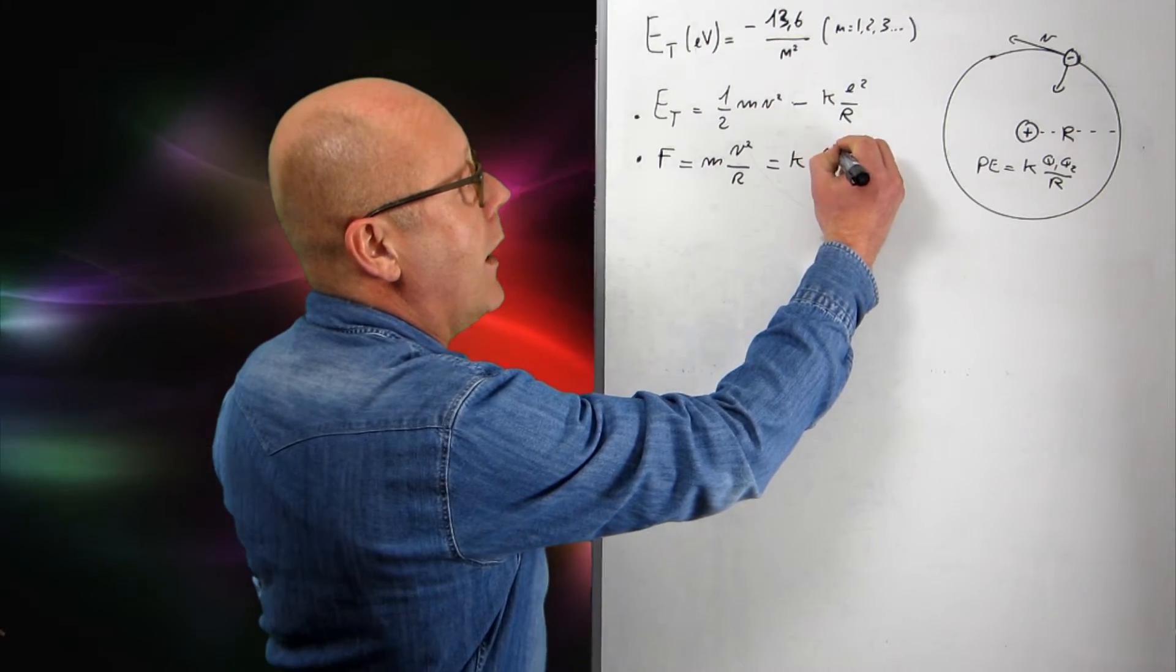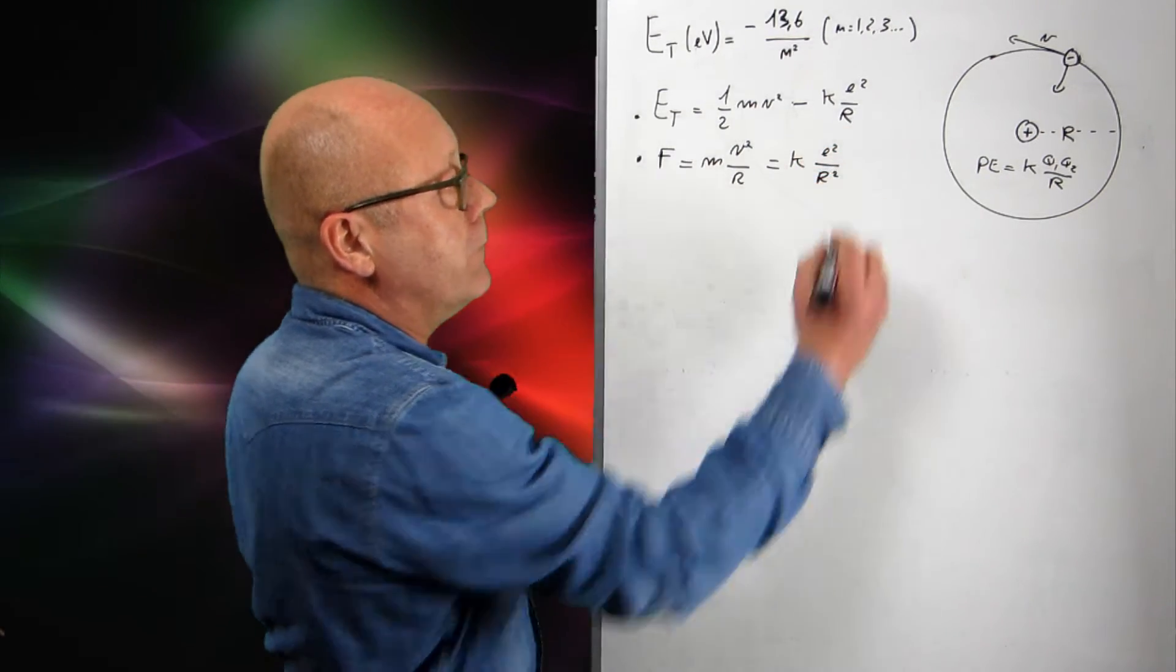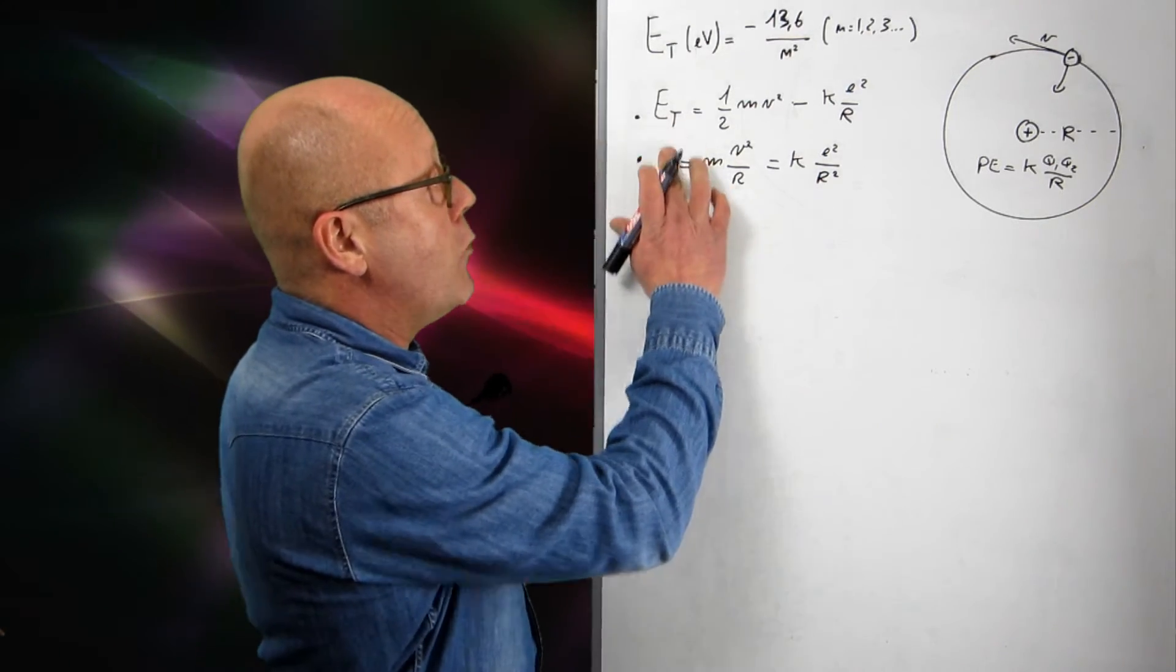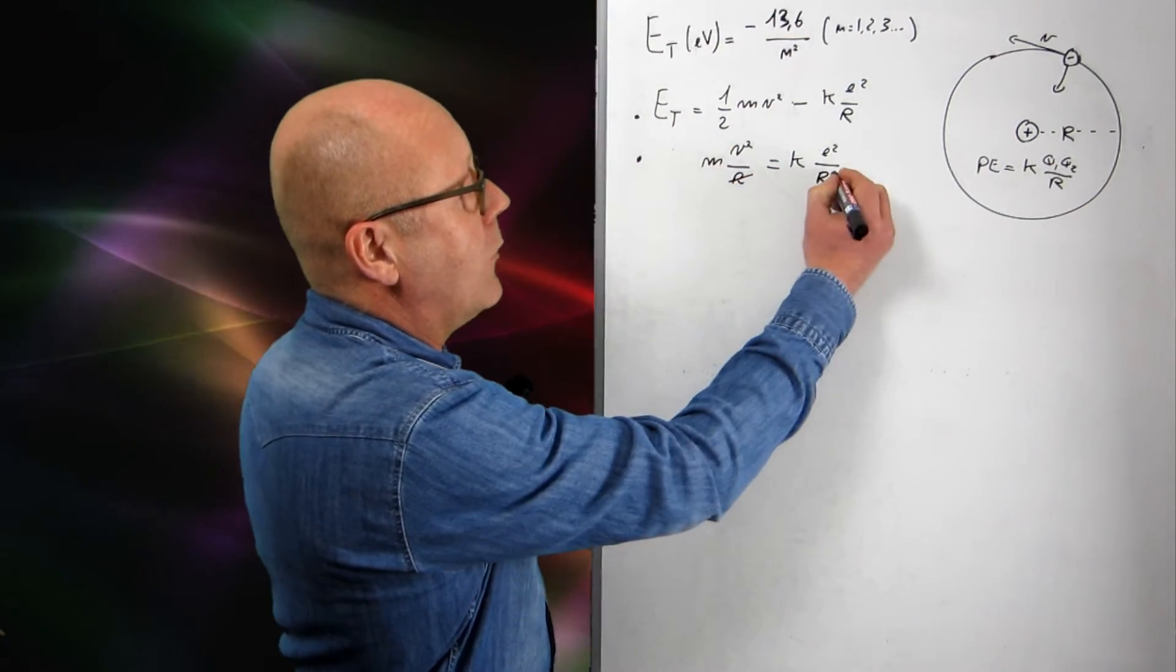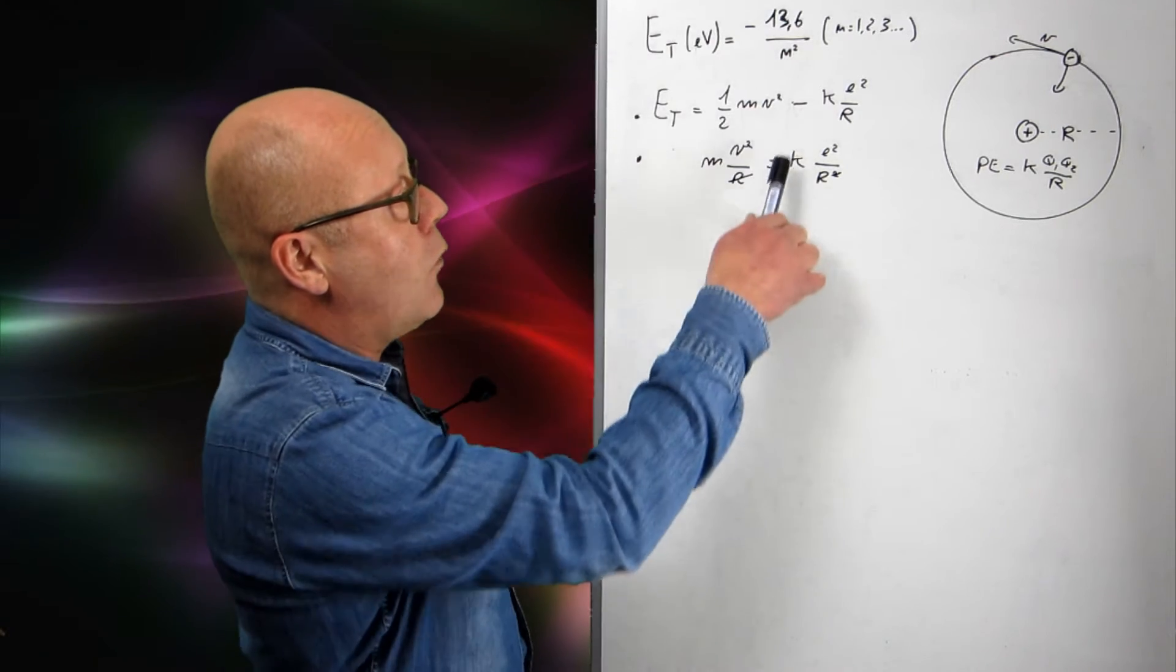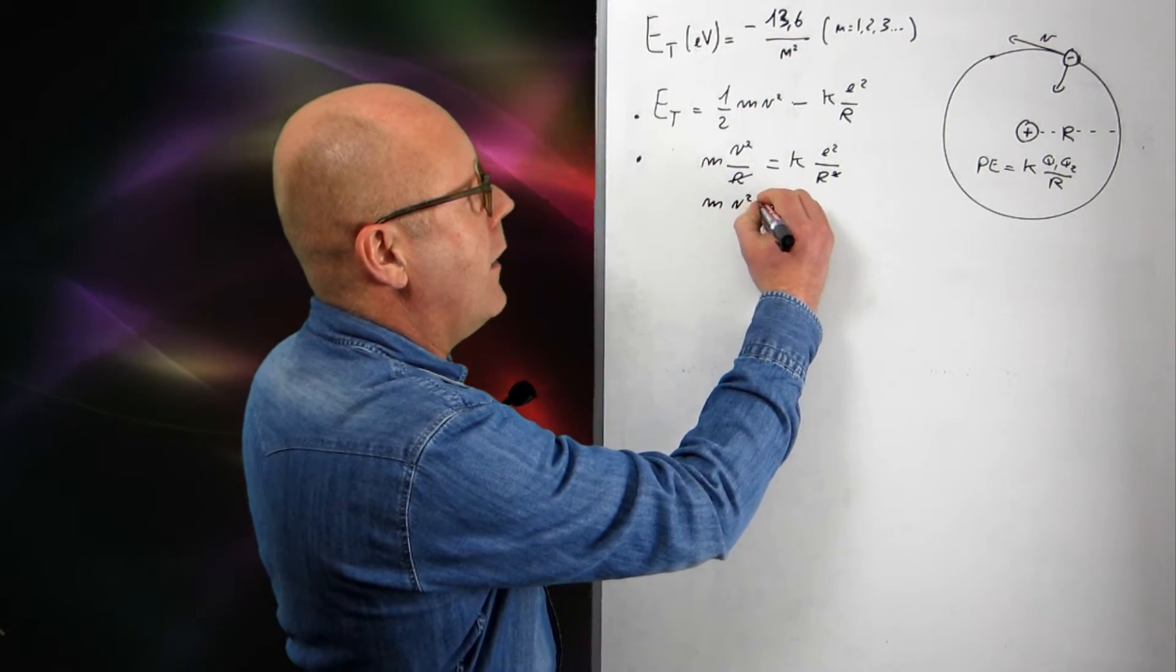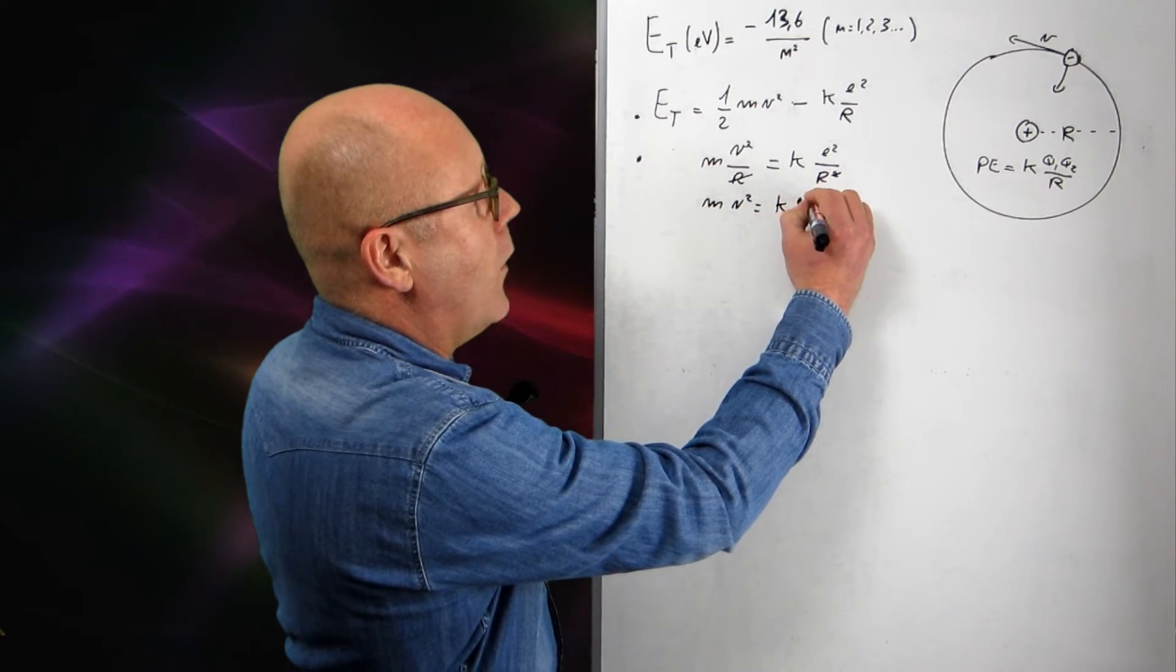So here it's going to be e squared on r squared. I see I'm going to remove this, so I can actually simplify the equation. And I get mv squared equals ke squared on r. I'll just write it down again. mv squared equals ke squared on r.